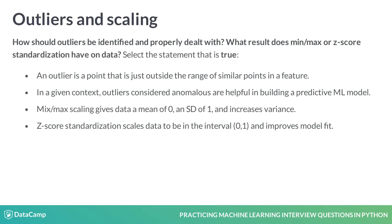Here is a multiple choice question before heading over to the exercises. How should outliers be identified and properly dealt with? What result does min-max or z-score standardization have on data? Select the statement that is true. If the answer is not immediately apparent, pause this video to read through the possible answers and give yourself a moment to think about it. If you still aren't sure, consider re-watching this video lesson and pay particular attention to the definition of outliers, when outliers are helpful, and what type of scaling does to the data before revealing the answer in the next slide.